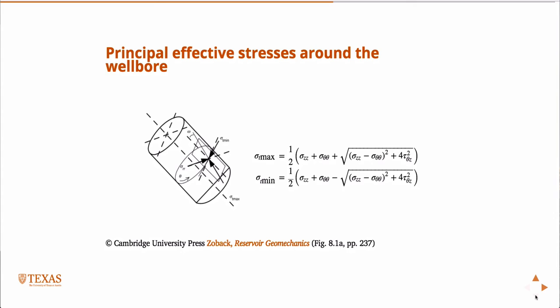So once we have the stress in the polar coordinates in the wellbore, we can compute the minimum, maximum tangential stresses. So these are going to be two of the principal stresses. The third is going to be sigma RR, which is equal to delta P at the wellbore wall.